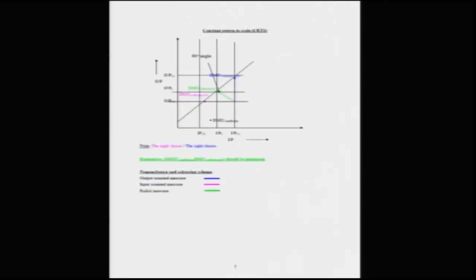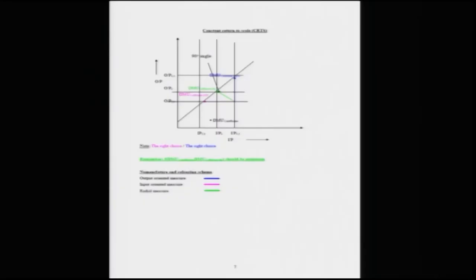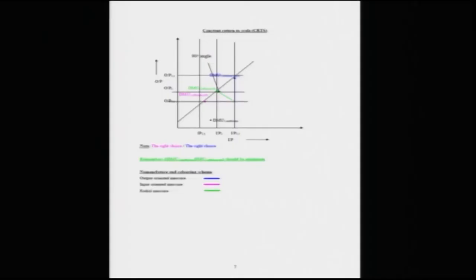We will now consider the constant return to scale. In the constant return to scale, it is a straight line with respect to input or output being drawn on the x-axis or y-axis. In this case we have output along the y-axis and input along the x-axis. If you reverse the diagram — input along the y-axis and output along the x-axis — the graph would be straight, meaning for one unit increase in input the output also increases in the same way such that constant return to scale is maintained. If a DMU is inefficient, it can go either vertically up, horizontally to the left or right, or vertically down depending on the type of diagram, to reach the efficient frontier. You will be concentrating on either input or output to maintain efficiency.